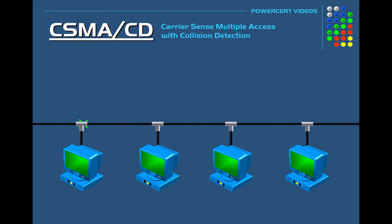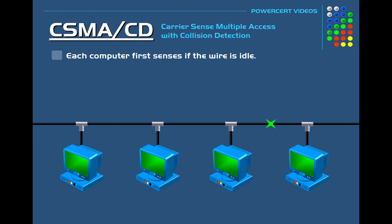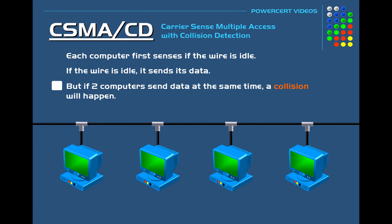CSMA-CD basically works by each computer first sensing if the wire is idle. If it is, it sends its data, therefore avoiding any collisions. But if you have two computers trying to send data at the same time, a collision will happen. If a collision happens, the computers will wait a random amount of time and retry to send their data.